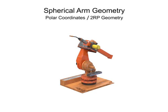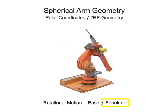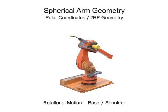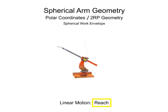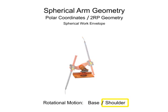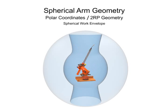Robotic arms with spherical geometry have rotational movement in two directions — rotational movement at the base and rotational movement at the shoulder. They also have linear motion in one direction, typically the reach of the arm. Spherical arm geometry robots have a mostly spherical work envelope at their outer reach, but are limited by the linear reach of the arm and the rotation of the shoulder joint. The shape of the robot's inner work envelope is almost conical and does not become a sphere until the arm extends.